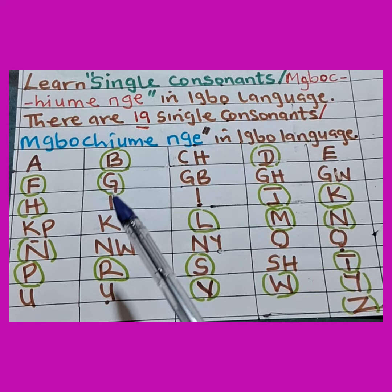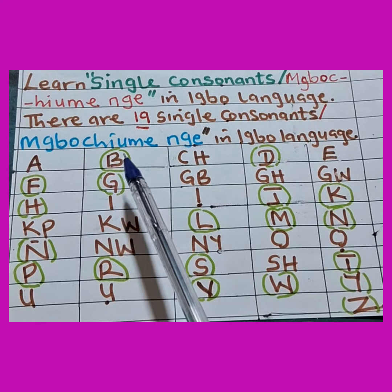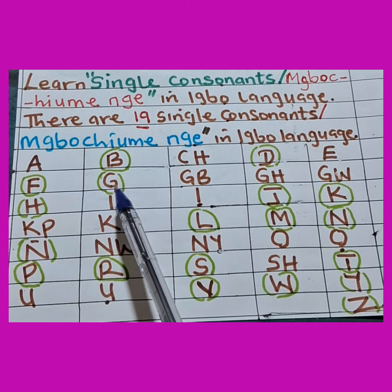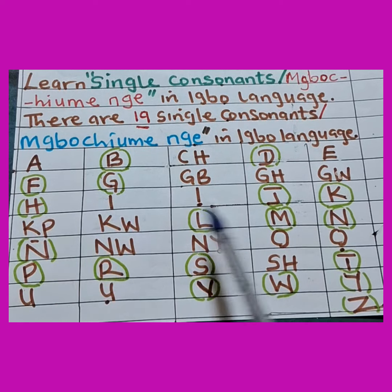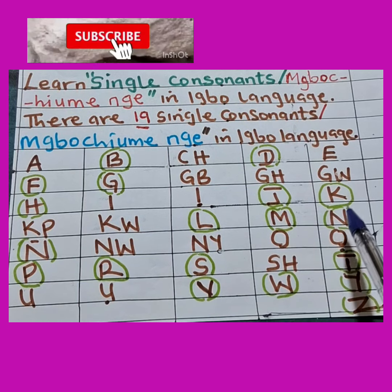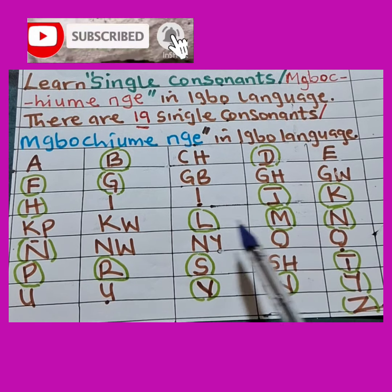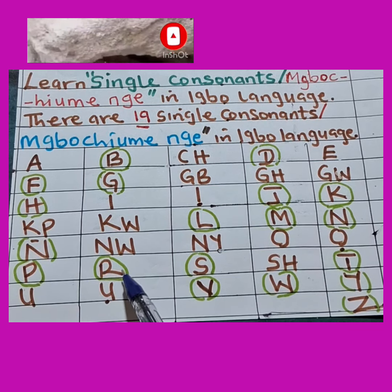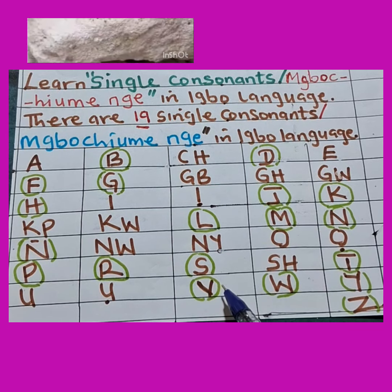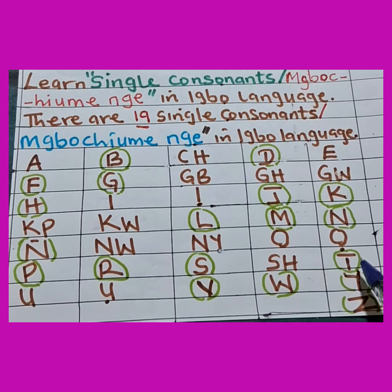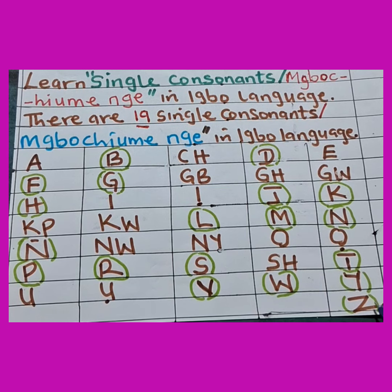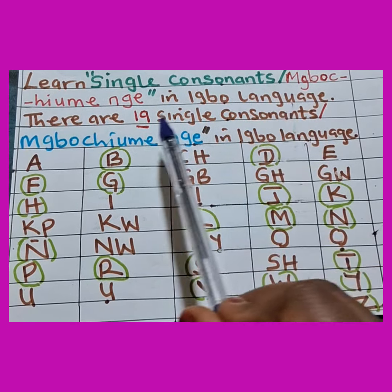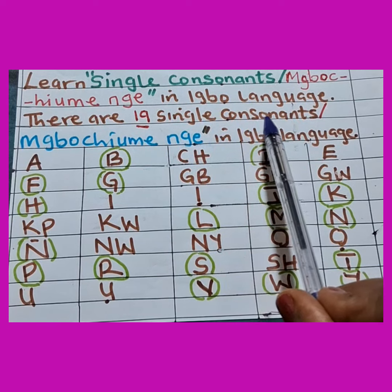Have you seen them? Let's count them: 1, 2, 3, 4, 5, 6, 7, 8, 9, 10, 11, 12, 13, 14, 15, 16, 17, 18, and 19. So single consonants are 19 in number.